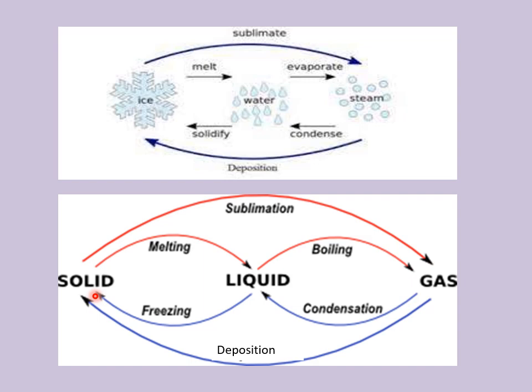We have not yet learned about sublimation and deposition, but we have learned melting, boiling, freezing, and condensation — how matter melts, evaporates, solidifies, and condenses — all covered in the last class and today's class. Remember: solid to liquid is melting, liquid to gas is boiling, gas to liquid is condensation, and liquid to solid is freezing. In melting and boiling, heat energy is supplied; in condensation and freezing, heat energy is given out.